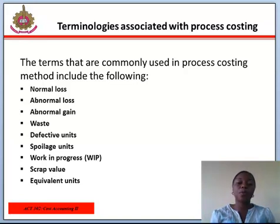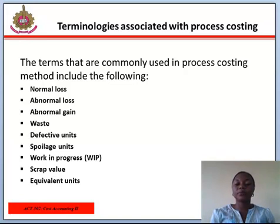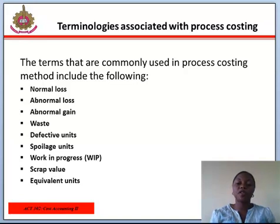Work-in-progress, or WIP, is the term used to describe units that are not yet complete at the end of the period. Opening work-in-progress is the number of incomplete units at the start of a process, while closing work-in-progress is the number of incomplete units at the end of the process. Scrap value: sometimes the outcome of a loss can be sold for a small value — for example, in the production of screws, metal wastage may be sold to a scrap merchant for a fee.